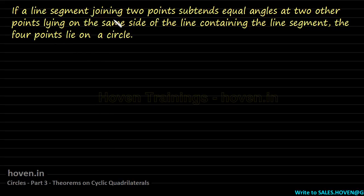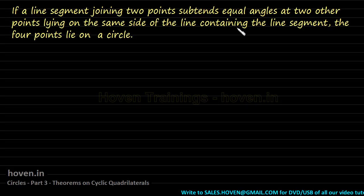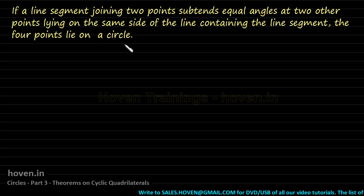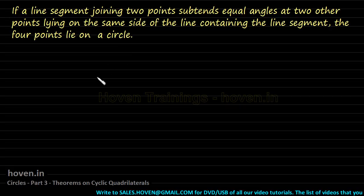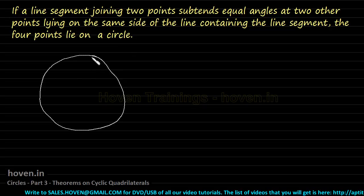If a line segment joining two points subtends equal angles at two other points lying on the same side of the line containing the line segment, the four points lie on a circle. This is a theorem. I will first draw a diagram to explain what this theorem exactly says.